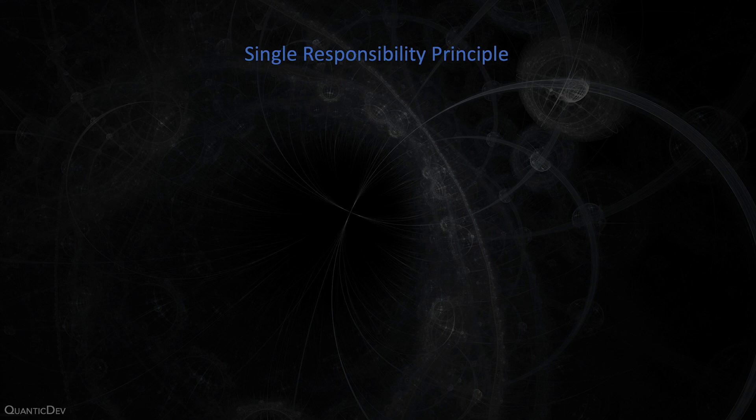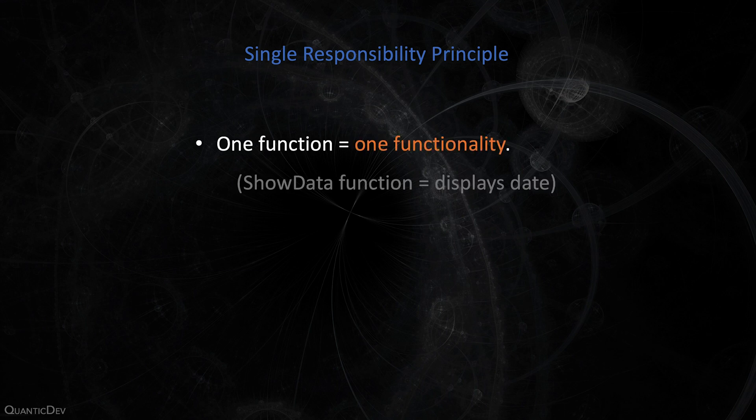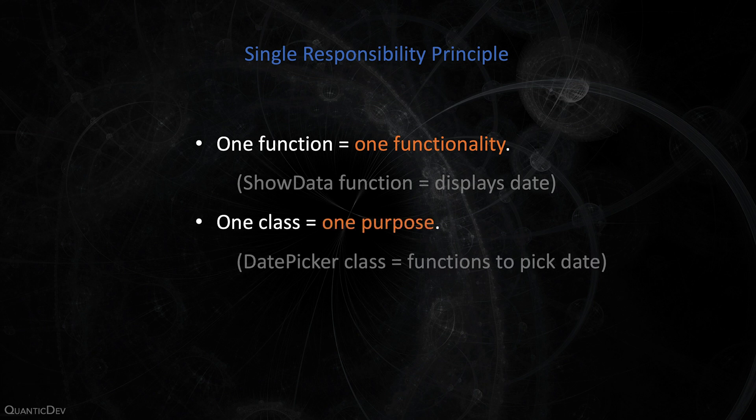5. Single Responsibility Principle. Any function you write should have one responsibility at a time — for instance, a function named ShowDate which prints out the current date. Any class you write should also have a singular purpose — for instance, a DatePicker class which encapsulates methods necessary to help the user pick a date.